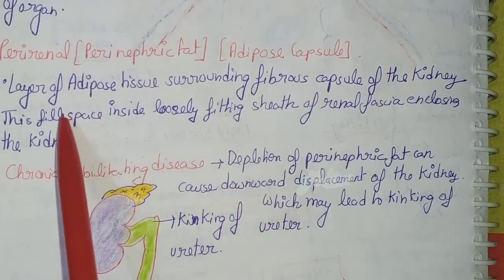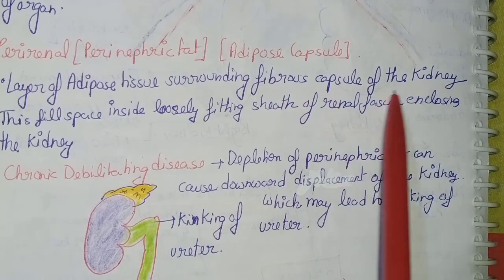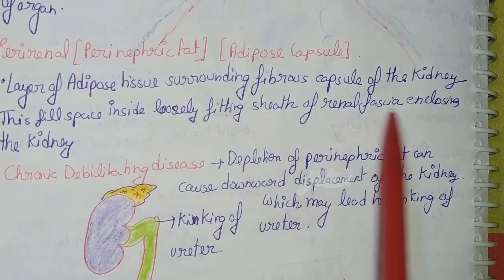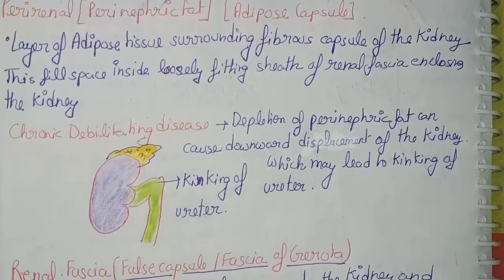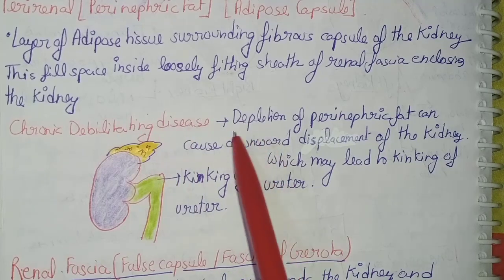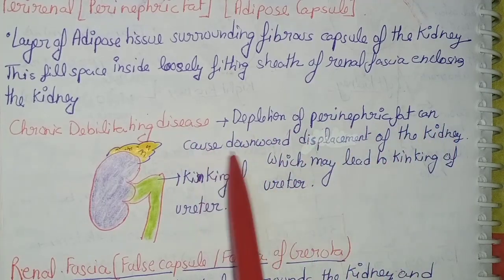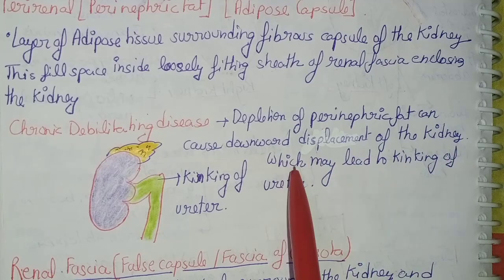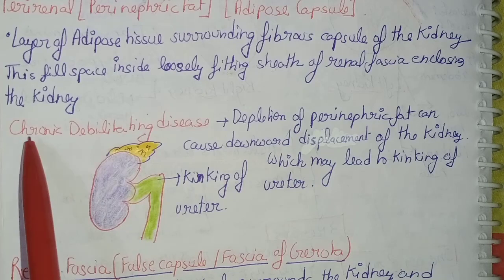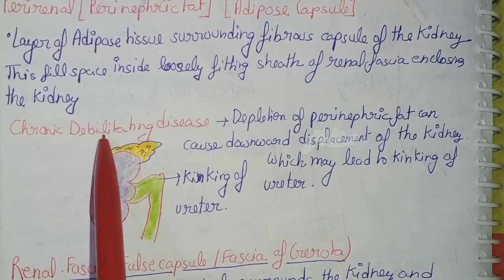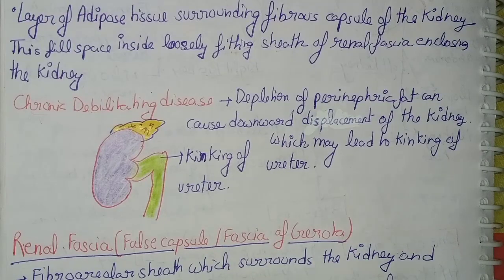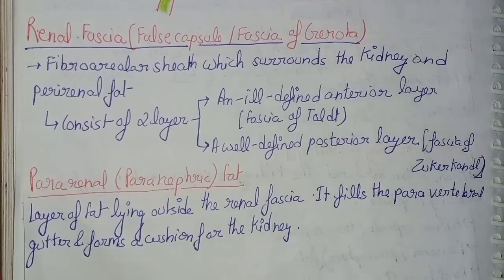The perinephric or perinephric fat, also called the adipose capsule, is a layer of adipose tissue surrounding the fibrous capsule of the kidney. It fills the loosely fitting sheath of renal fascia enclosing the kidney. An important clinical note: in chronic debilitating disease, depletion of perinephric fat can cause downward displacement of the kidney, which may lead to kinking of the ureter, as shown in the diagram.